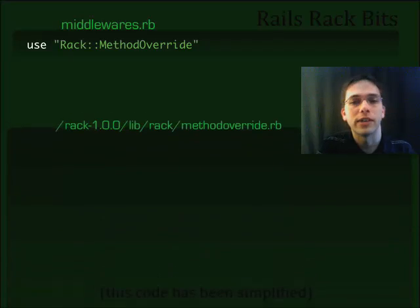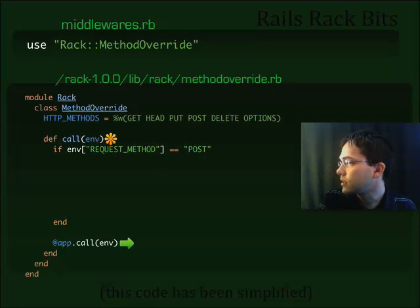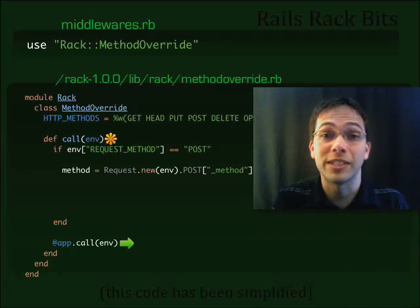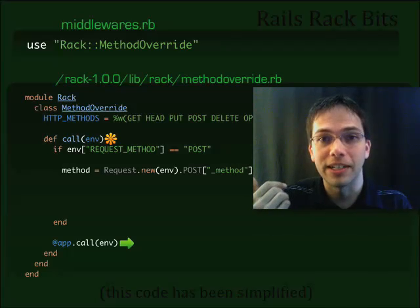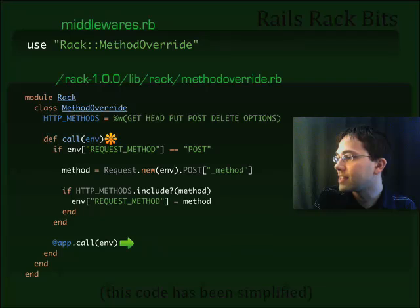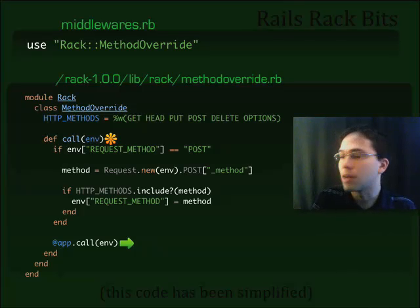Next up, we've got Rack Method Override. It looks like we've got our HTTP methods, a call definition and call forward. So if we're doing a POST request and we get the underscore method parameter — think back to when you've looked at the source of a form doing a PUT or DELETE, you'll recognize that underscore method parameter. So if this is a proper HTTP method, we set the request method equal to PUT or DELETE. This middleware basically sets the proper request method, since browsers don't know how to do PUT or DELETE natively.